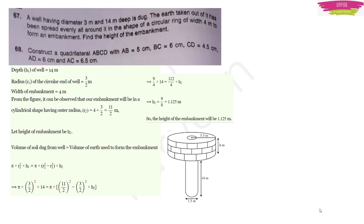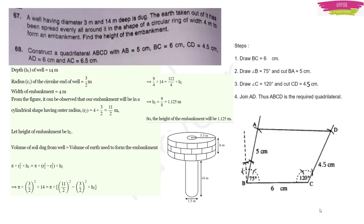Question 68: Construct quadrilateral ABCD with AB = 5 cm, BC = 6 cm, CD = 4.5 cm, AD = 6 cm, AC = 6.5 cm. Draw BC = 6 cm, construct angle B = 75°, cut arc BA = 5 cm. Construct angle C = 120° (double of 60°), cut arc CD = 4.5 cm. Join AD to complete quadrilateral ABCD.